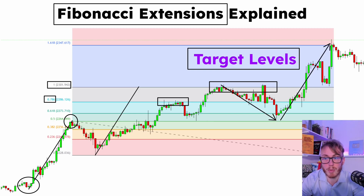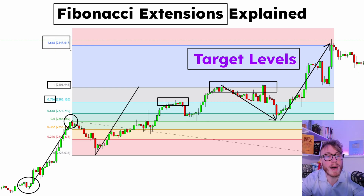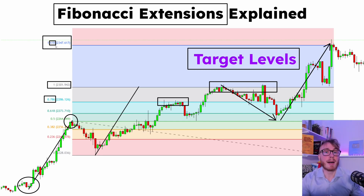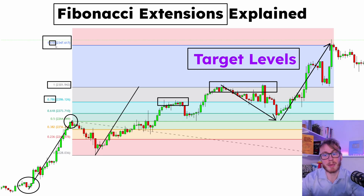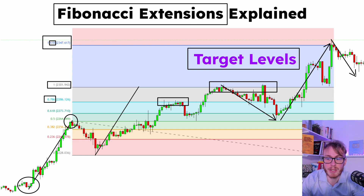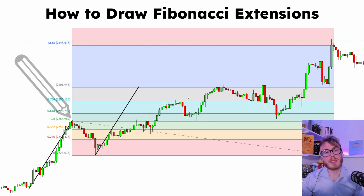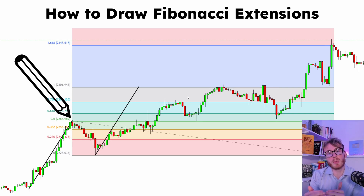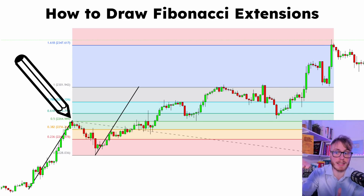Then the price pushed all the way up to the 1.618, and this 0.618 number is probably by now very familiar — that number comes from the Fibonacci sequence we talked about earlier. This was the point the price reversed. Now let's switch attention and take a look at how we draw our Fibonacci extensions correctly.